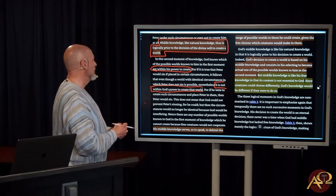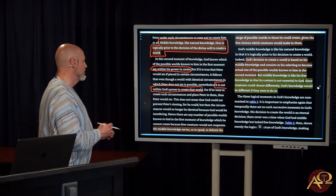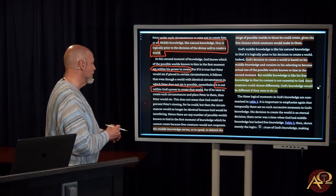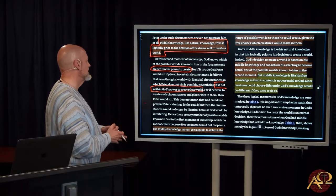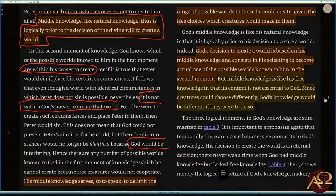For if he were to create such circumstances and place Peter in them, then Peter would sin. This does not mean that God could not prevent Peter sinning, for he could, but then the circumstances would no longer be identical because God would be interfering.